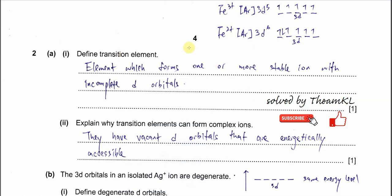Question 2A part 1: define transition elements. Transition elements are elements which form one or more stable ion with incomplete d orbitals. This is a standard definition of transition elements. I give one example: the 2+ ion and 3+ ion. Iron is a transition element because it can form these two major cations.